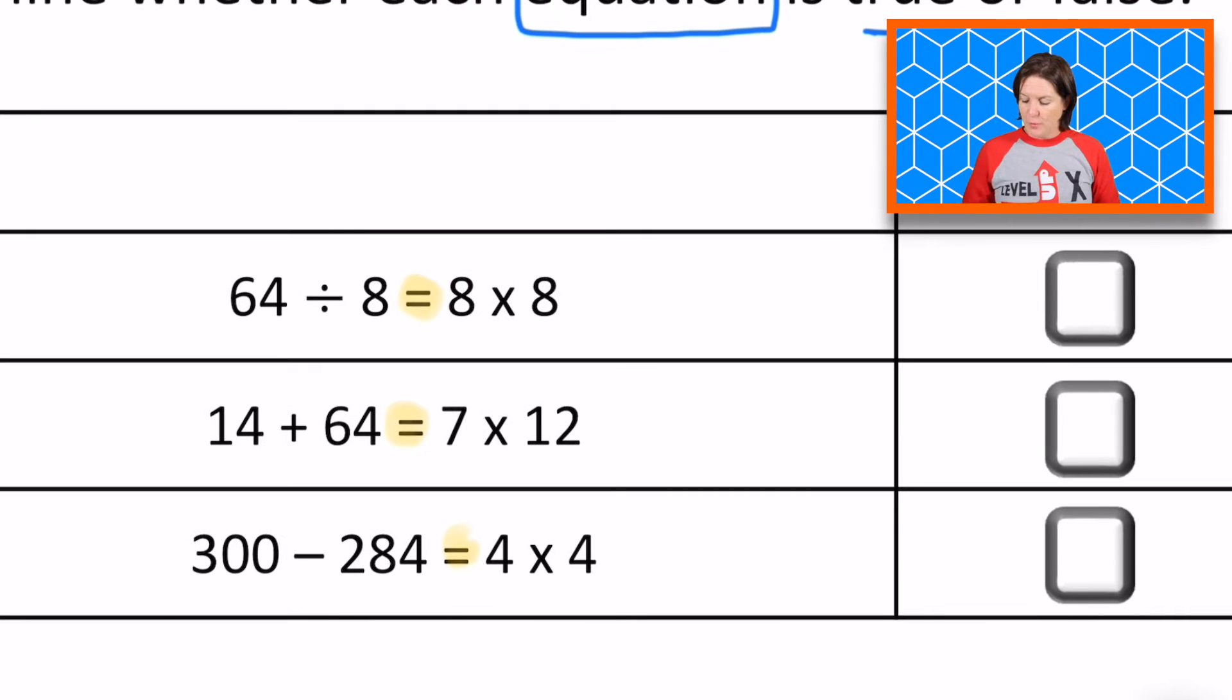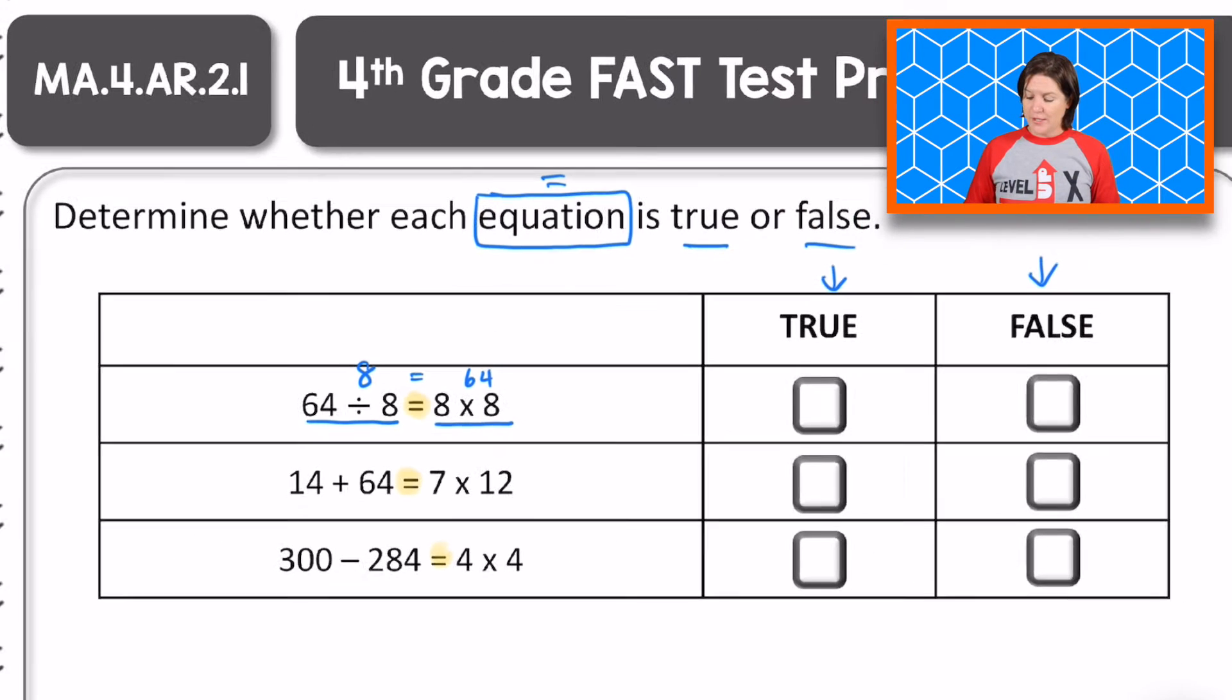Starting with the first one. So the left side, 64 divided by 8. What is 64 divided by 8? It's 8. And then 8 times 8 equals what? 64. That's right. So does 8 on the left equal 64 on the right side of the equation? No, which means that do we need to select true or false? False, right? This equation is false.